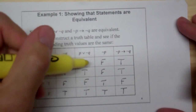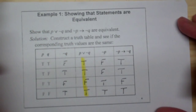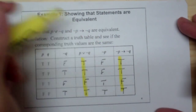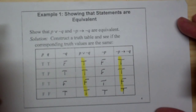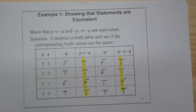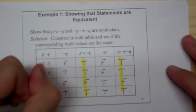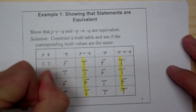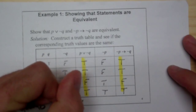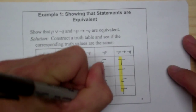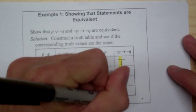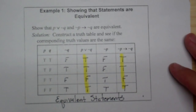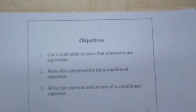If we look, the P∨¬Q column is T, T, F, T. The ¬P→¬Q column is also T, T, F, T. They have the same corresponding truth values, so these are equivalent statements. That takes care of objective number one: use the truth table to show that statements are equivalent.